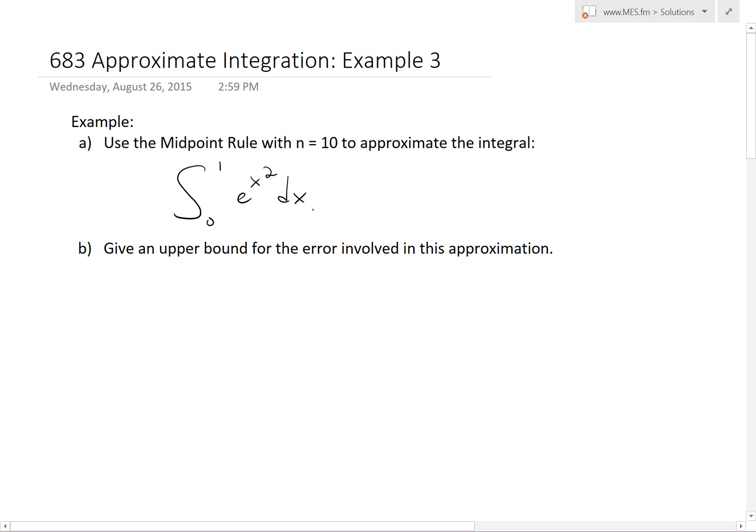Hi, it's time for another math easy solution. We're going to discuss further into approximate integration and look at example 3 of the example series. We'll go over this example which states: use the midpoint rule with n equals 10 to approximate the integral, and then part b, give an upper bound for the error involved in this approximation.